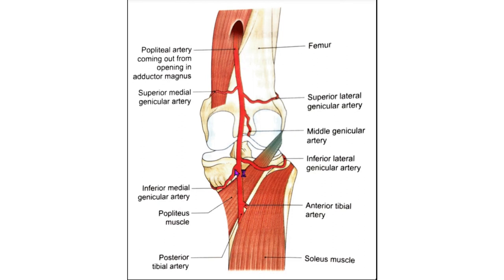Several muscular branches are given off from the popliteal artery. The upper two or three muscular branches supply the adductor magnus muscle and the hamstrings. The lower branches supply the gastrocnemius, soleus and plantaris muscles. Cutaneous branches arise directly from the popliteal artery or indirectly from its muscular branches. The genicular branches are five in number: two superior genicular branches, one middle genicular branch and two inferior genicular branches.